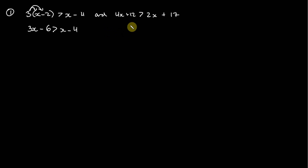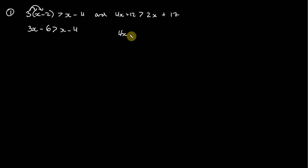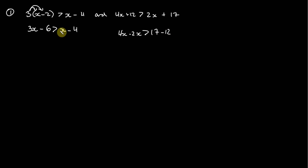On the right side we don't need to distribute anything — we just need to subtract 2x from both sides and 12 from both sides, giving us 4x minus 2x and 17 minus 12.